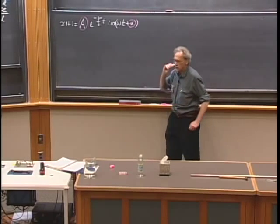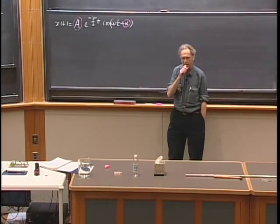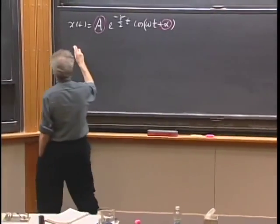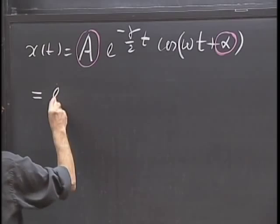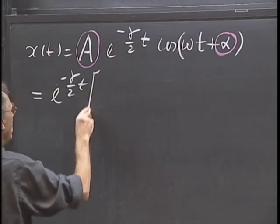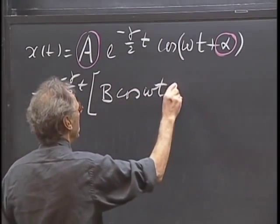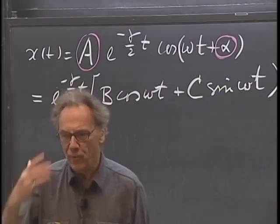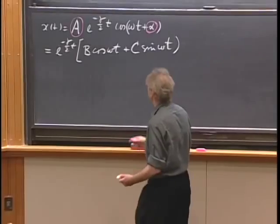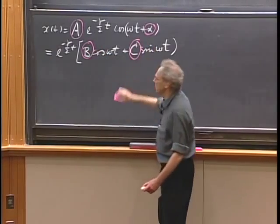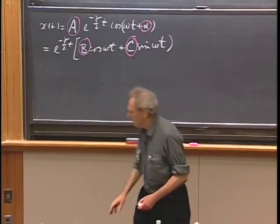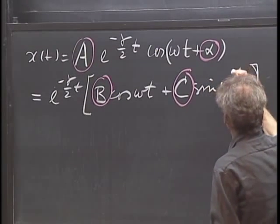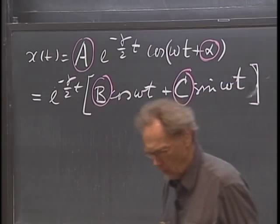There is another way to write this form: e to the minus gamma over 2 times t, times (B cosine omega t plus C sine omega t). From the physics point of view there is no difference, but mathematically you now have B and C as the two adjustable constants depending on initial conditions. Sometimes one form works faster than the other depending on the initial conditions.